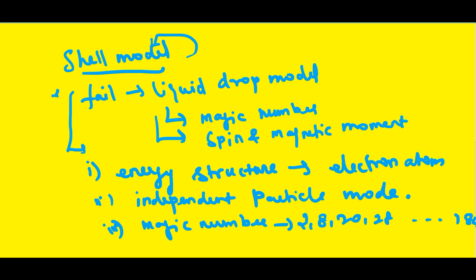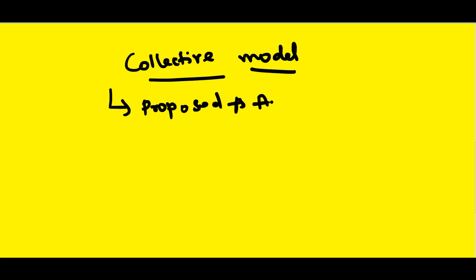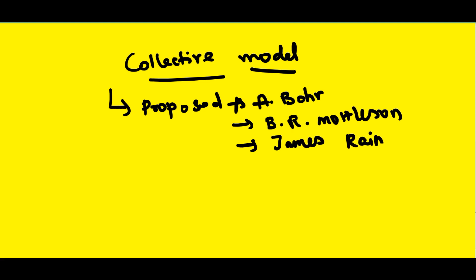Now we move directly to the collective model. The collective model was proposed by three authors: A. Bohr, B.R. Mottelson, and James Rainwater. This was a question asked in a previous exam around 2019, where the answer given was A. Bohr.